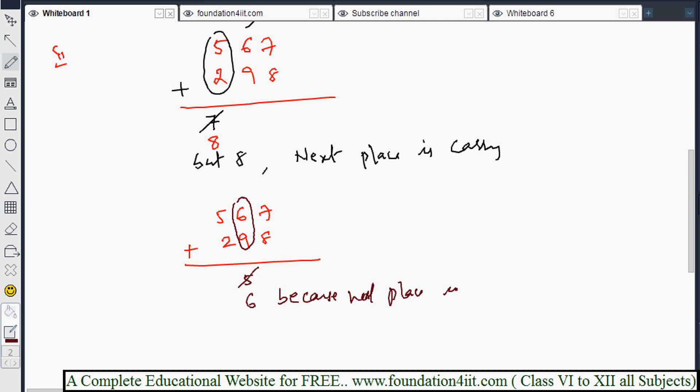Nine, 6 end number is 5, but next place is carry so instead of 5 we'll write 6, one number extra. Because next place is carry, next place is carry. Right, because 7 and 8.